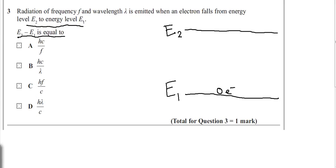First we need to know what are energy levels. Energy levels are different levels of energy where electrons exist in quantized orbits. An energy level is just the quantized orbit where electrons exist. Here, E2 is the higher energy level and E1 is the lower energy level. Therefore E2 has got more energy whereas E1 has less energy.